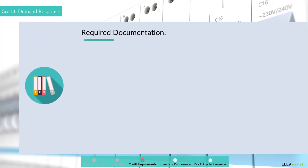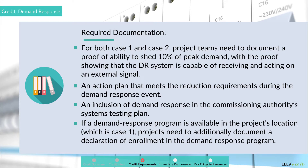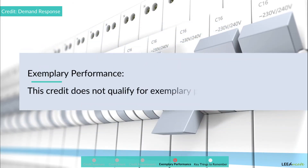Activity 4: contact the local utility to discuss participation in future demand response programs. For both Case 1 and Case 2, project teams need to document a proof of ability to shed 10% of peak demand, showing the DR system is capable of receiving and acting on an external signal. Teams also need to document an action plan that meets the reduction requirements during the DR event, and inclusion of demand response in the commissioning authority's systems testing plan. For Case 1, projects must additionally document a declaration of enrollment in the demand response program. Note that this credit does not qualify for exemplary performance.